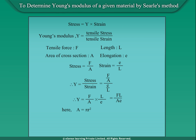Here, A is equal to pi R square, where R is the radius of the wire. If the tensile force F is due to a mass M attached to the wire, we have F equal to Mg. So, Y is equal to MgL upon pi R square E. This equation is used to find the Young's Modulus of the material of a wire by Searle's Method.